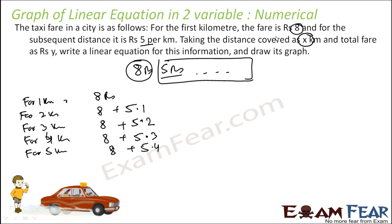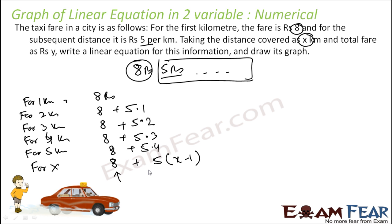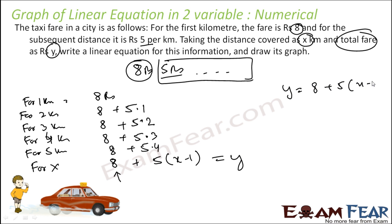Taking the distance covered as x kilometers, find the total fare. For x kilometers, the first kilometer is 8 rupees. The next x minus 1 kilometers will be 5 into (x minus 1). The first kilometer is 8 rupees, and what is remaining is x minus 1 kilometers. For the next x minus 1 kilometers, the total charge will be 5 into (x minus 1). So the total fare y gives us the equation: y is equal to 8 plus 5 into (x minus 1). Solving this, y equals 8 plus 5x minus 5, or y minus 5x is equal to 3.